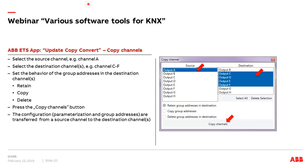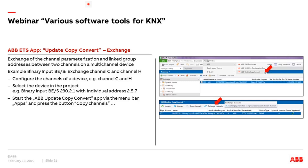Exchanging channels within one product is also possible. Example with a binary input: due to wrong wiring in the distribution board we don't want to rewire, so we change the channels in the application — for example channel C with channel H. Select the device, click exchange channels in the app, specify which channels to swap along with group address options, and press the button. Very simple but quite useful when you can't easily access components to change wiring.